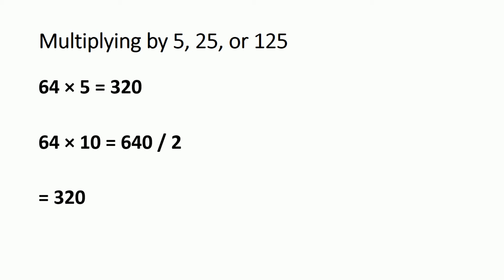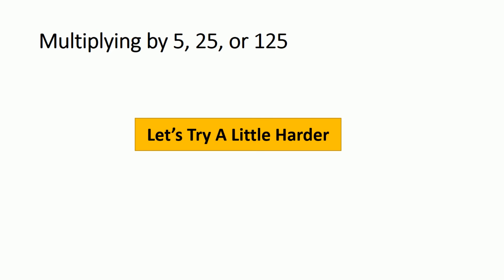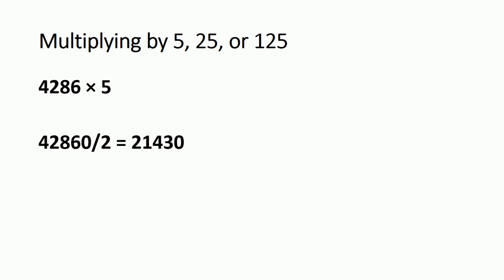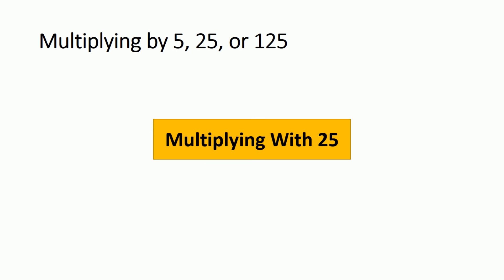Division by 2 is easy — for 640, separate the digits: 6 divided by 2 is 3, 4 divided by 2 is 2, giving 320. For a harder example, 4286 multiplied by 5: just write a zero at the end of the number and divide by 2. All digits are even, so you can do it in just a second.